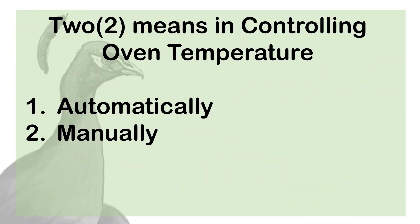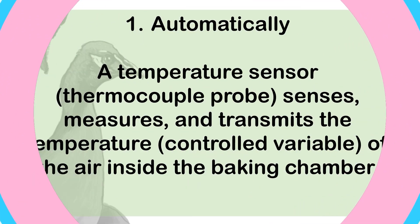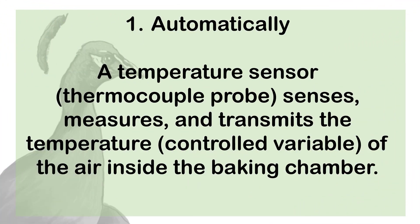Controlling oven temperature: We have two means of controlling oven temperature. Number 1: Automatically. The temperature sensor senses, measures, and transmits the temperature of the air inside the baking chamber.